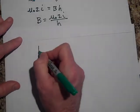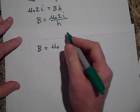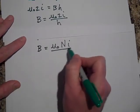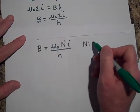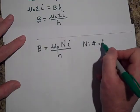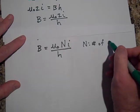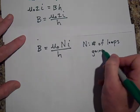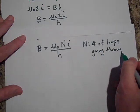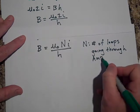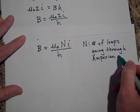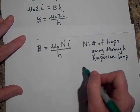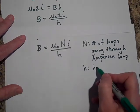But that's just going to be more generically mu naught times N times i all over H, where N is the number of loops going through Amperian loop. And H is the height of the Amperian loop.